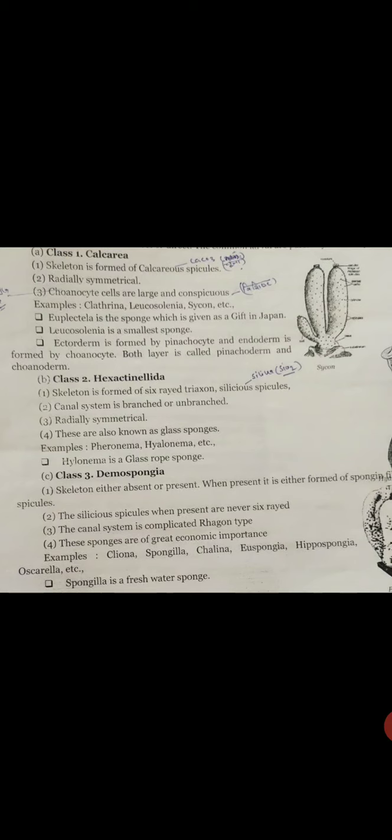These are radially symmetrical. Choanocyte cells are large and conspicuous. Choanocyte cells have flagella present in their center.